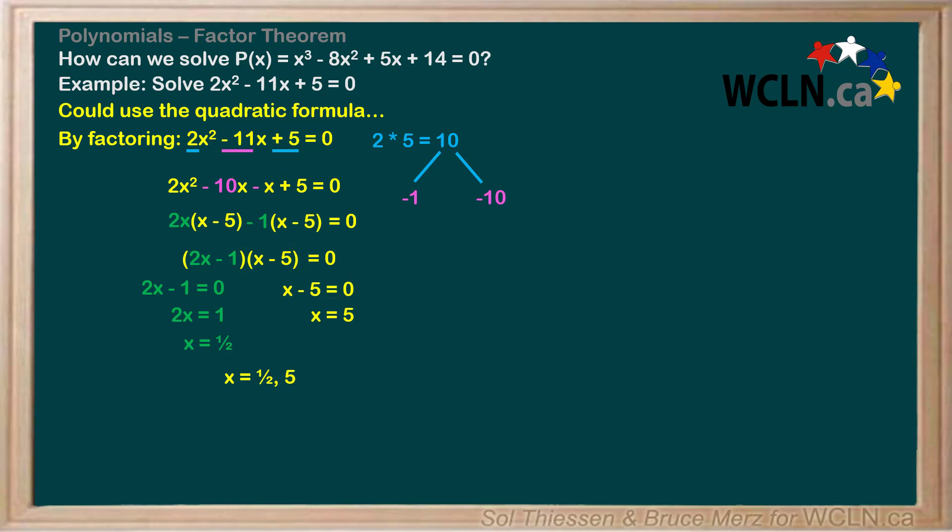Hopefully this has been a nice refresher on how to find the roots of a quadratic function by factoring, but what if the function is cubic, or quartic, meaning degree 3 or 4? Look at this example: solve P(x) = x³ - 8x² + 5x + 14 = 0 from the beginning of the video.